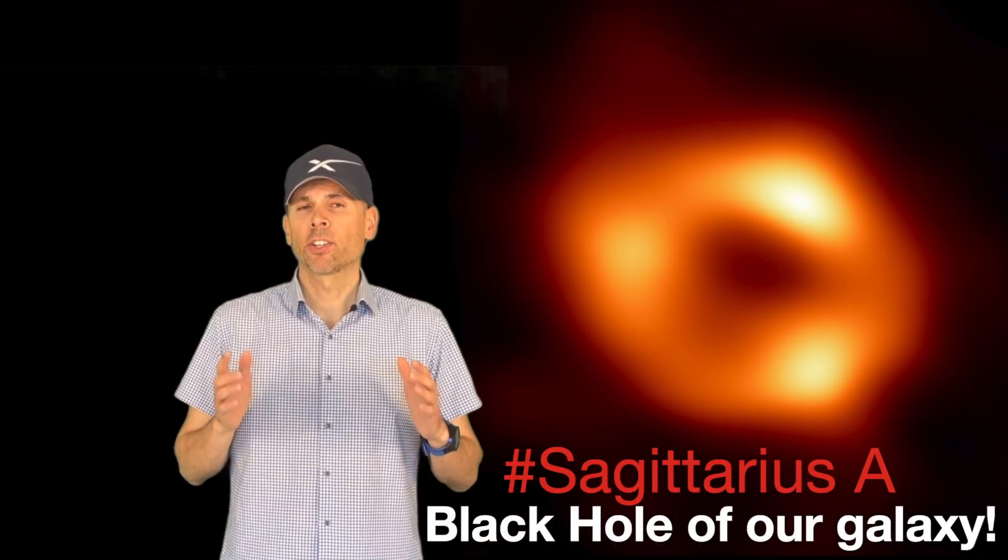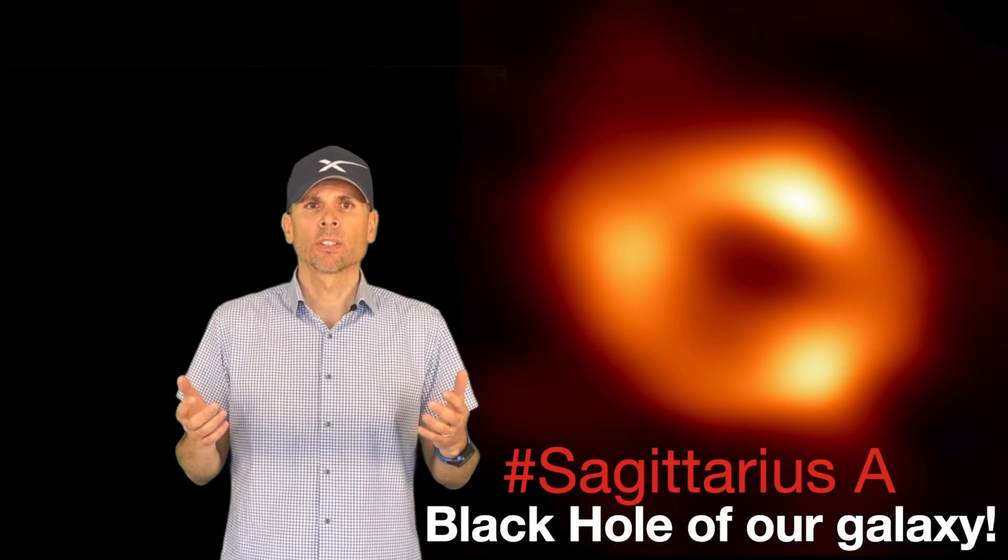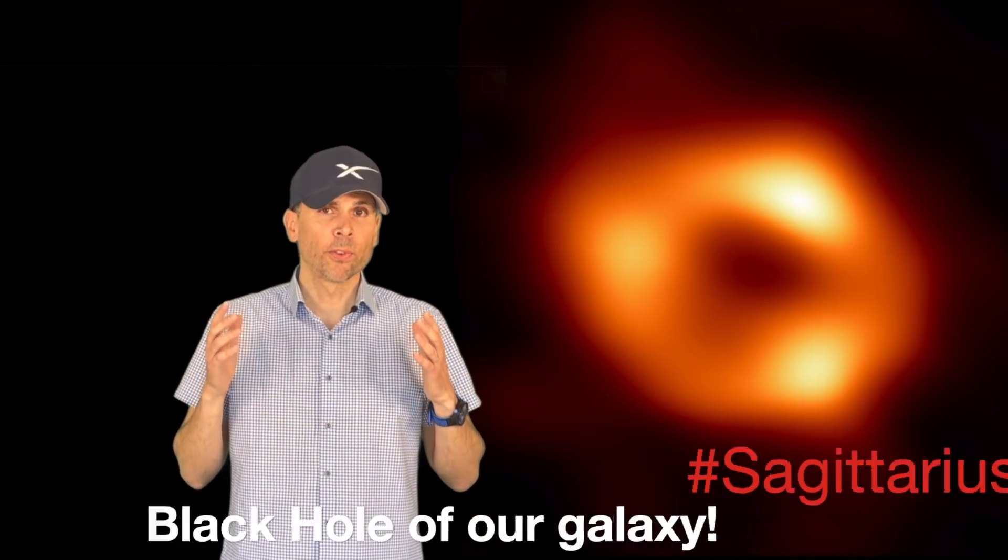This week, on Thursday the 12th of May, scientists and members of the Event Horizon Telescope project once again held a press conference and revealed the first picture of the black hole in the center of our galaxy called Sagittarius A, which possesses 4 million times the mass of our sun and which is located about 26,000 light years or 9.5 trillion kilometers from Earth.